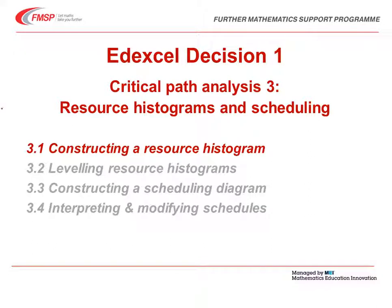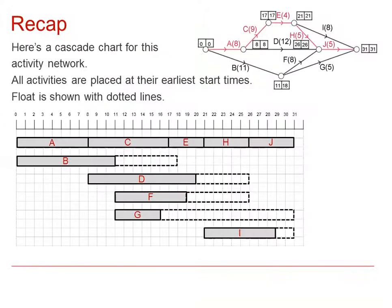Edexcel Decision 1 Critical Path Analysis 3: Resource Histograms and Scheduling. We are constructing a resource histogram. We have an activity network as you can see in the top right-hand corner, and below we have a cascade chart, also known as a Gantt diagram, for this network.